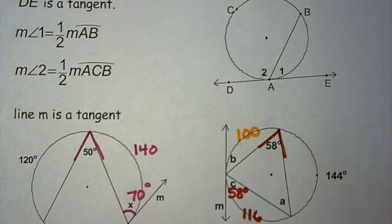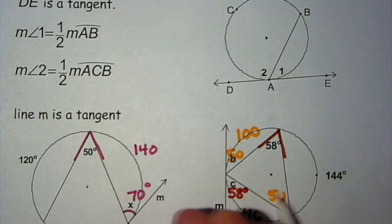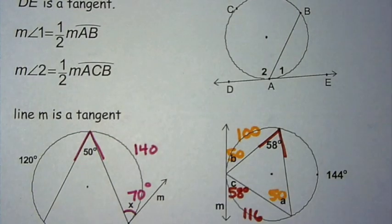So that arc up there is going to be 100 degrees. And angle B is going to be half of that arc, so it's 50. Angle A is also an inscribed angle on that 100 degree arc, so it's going to be half of 100, which is 50 also.